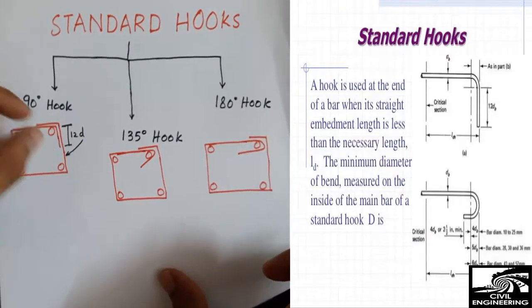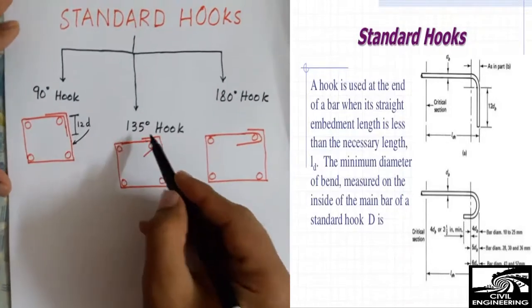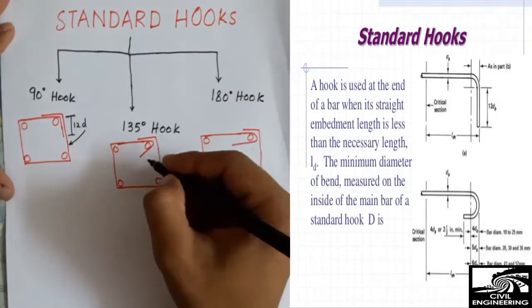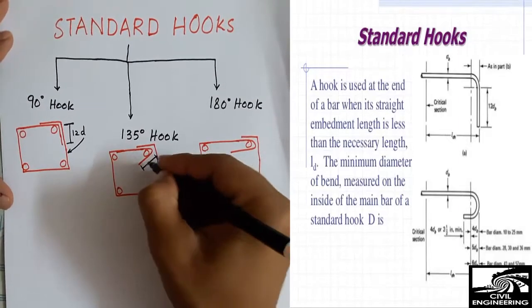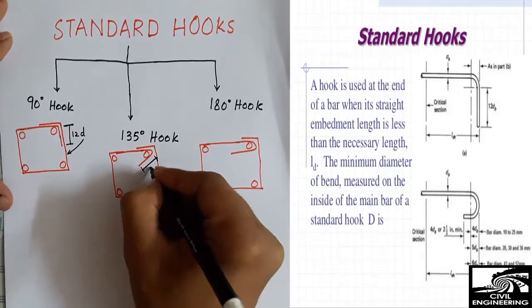Now coming to the 135 degree, ACI recommends that you should provide the length of this hook as 8d.